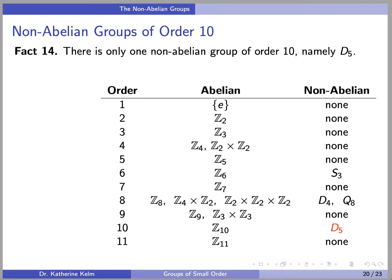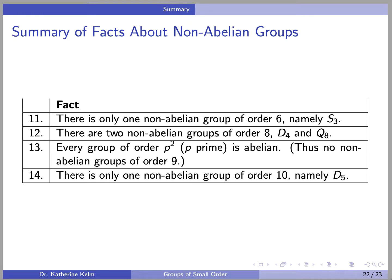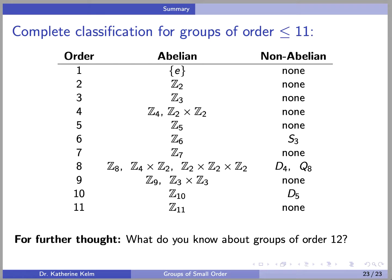Finally, for order 10: Fact 14, our last fact for this video - there is only one non-abelian group of order 10, namely D5. Here is our summary of facts about groups of small order. The first ten facts were about abelian groups, and Facts 11 through 14 were about non-abelian groups. Here is our complete classification for groups of order less than or equal to 11 shown in this table. What do you know about groups of order 12? I hope you found this video helpful.